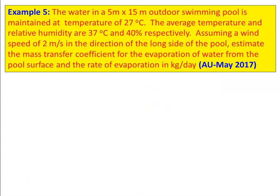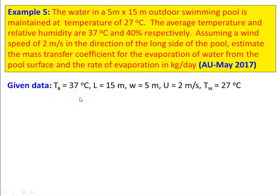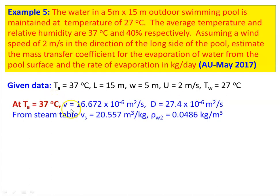We take example number five. Water in a 5 m × 15 m outdoor swimming pool is maintained at 27°C. The average air temperature and relative humidity are 37°C and 40% respectively. Assuming a wind speed of 2 m/s in the direction of the long side, estimate the mass transfer coefficient for evaporation and the rate of evaporation in kg/day. This is from May 2017. Air temperature T = 37°C, L = 15 m, width = 5 m, u = 2 m/s, water temperature = 27°C. Kinematic viscosity at 37°C: ν = 16.67 × 10⁻⁶ m²/s.